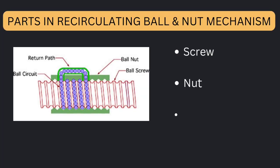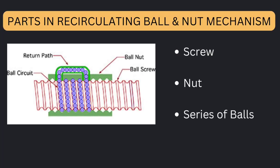The main parts used in the recirculating ball and nut mechanism are the screw, nut, and series of balls.